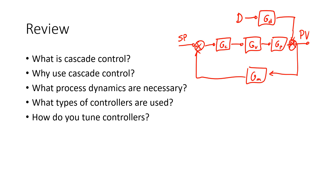The disturbance drives me away from the set point, and then I have an error between my measured process variable and my set point. My feedback control loop is going to take care of that error. But let's say we can measure the disturbance or measure its effect, and we want to reject it before it causes an error in my system.